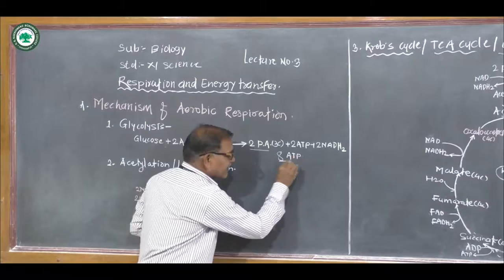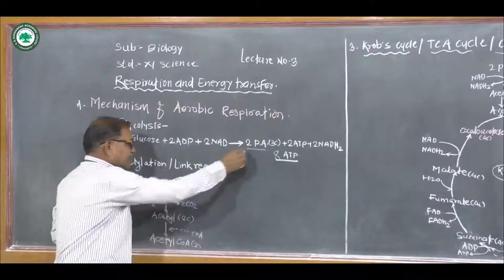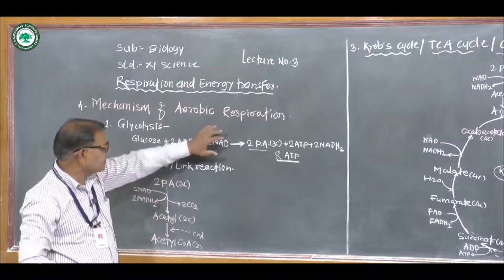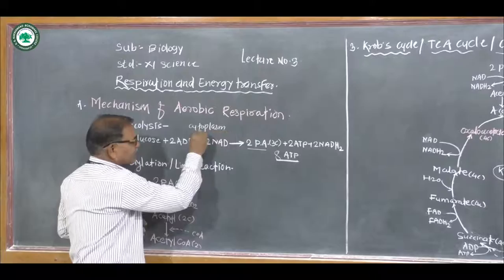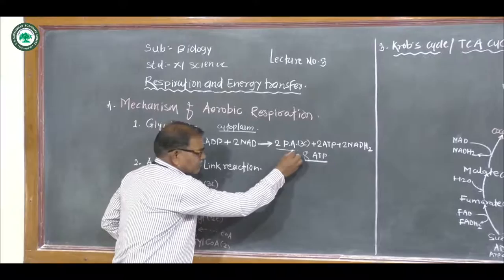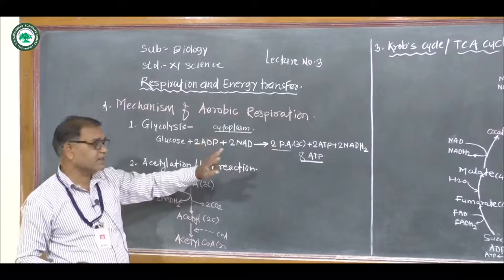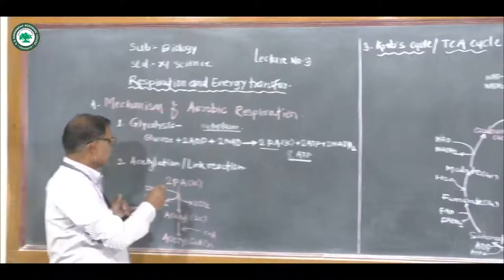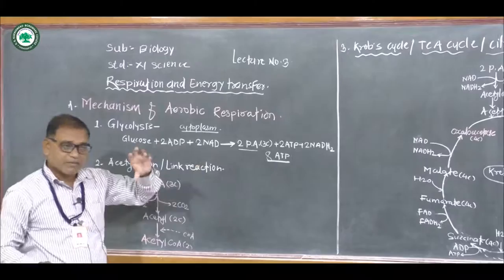Glycolysis takes place within the cytoplasm, hence it is referred to as cytoplasmic respiration or protoplasmic respiration. The two molecules of pyruvic acid formed in glycolysis do not directly enter the mitochondria; therefore, some link reactions take place within the membranes of mitochondria.